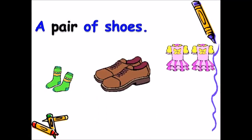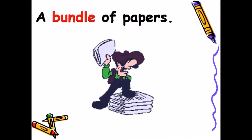Next, there are some pairs of shoes, of socks, of frocks — a pair of shoes. So, 'pair' is a collective noun which refers to the group of shoes, more than one shoe. Next, a bundle of papers. Here, 'bundle' is a collective noun which refers to the group of papers.